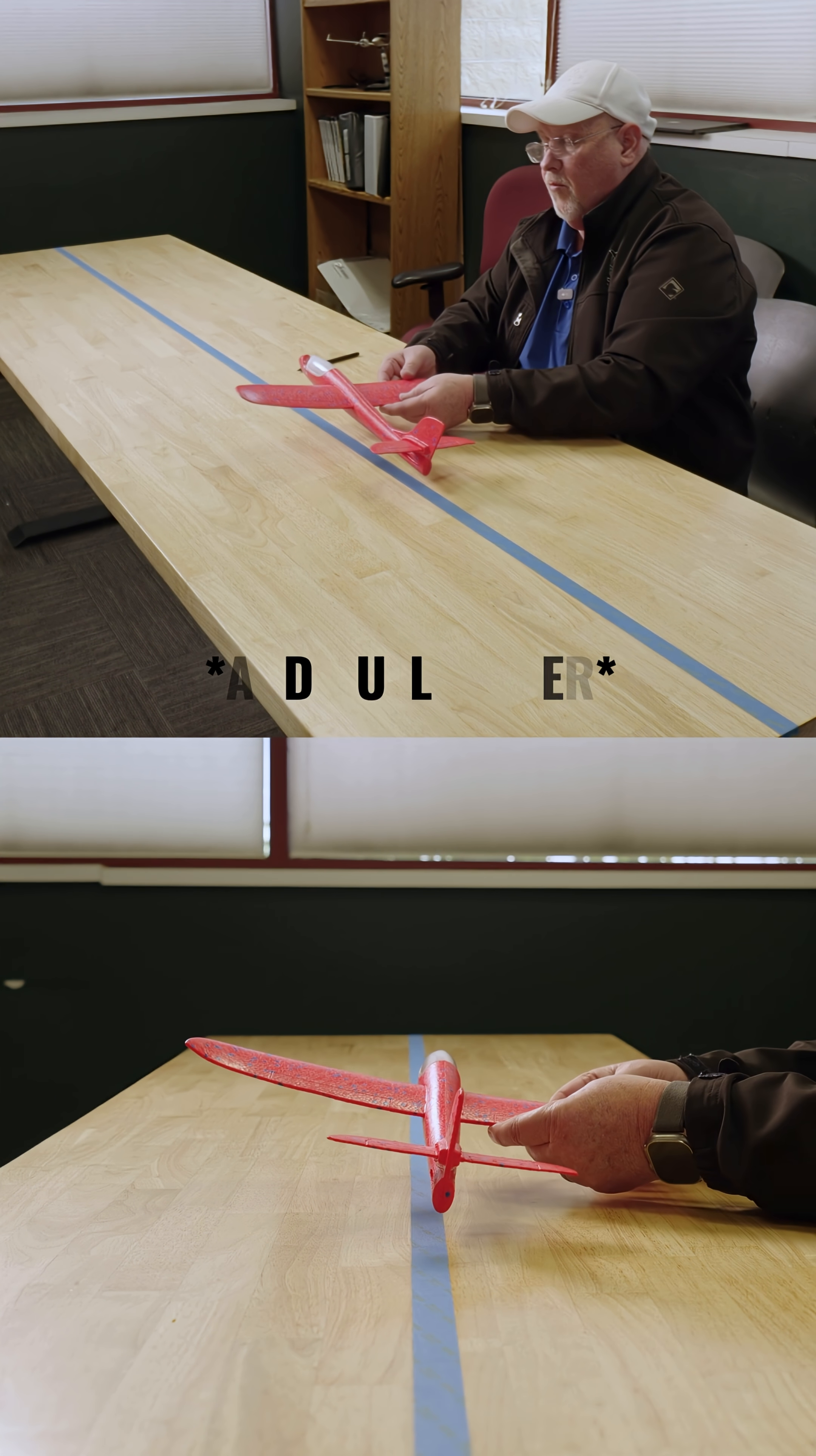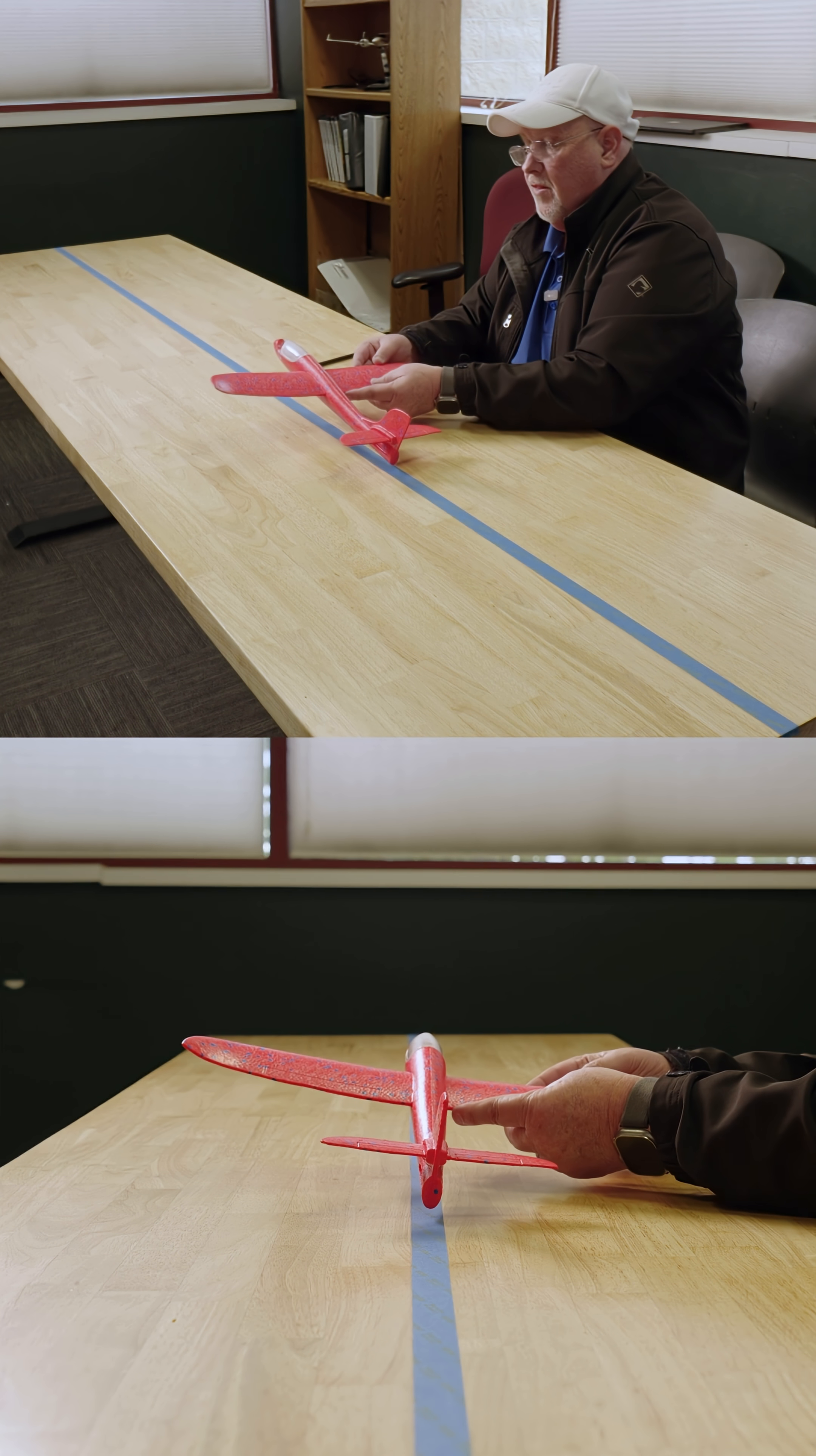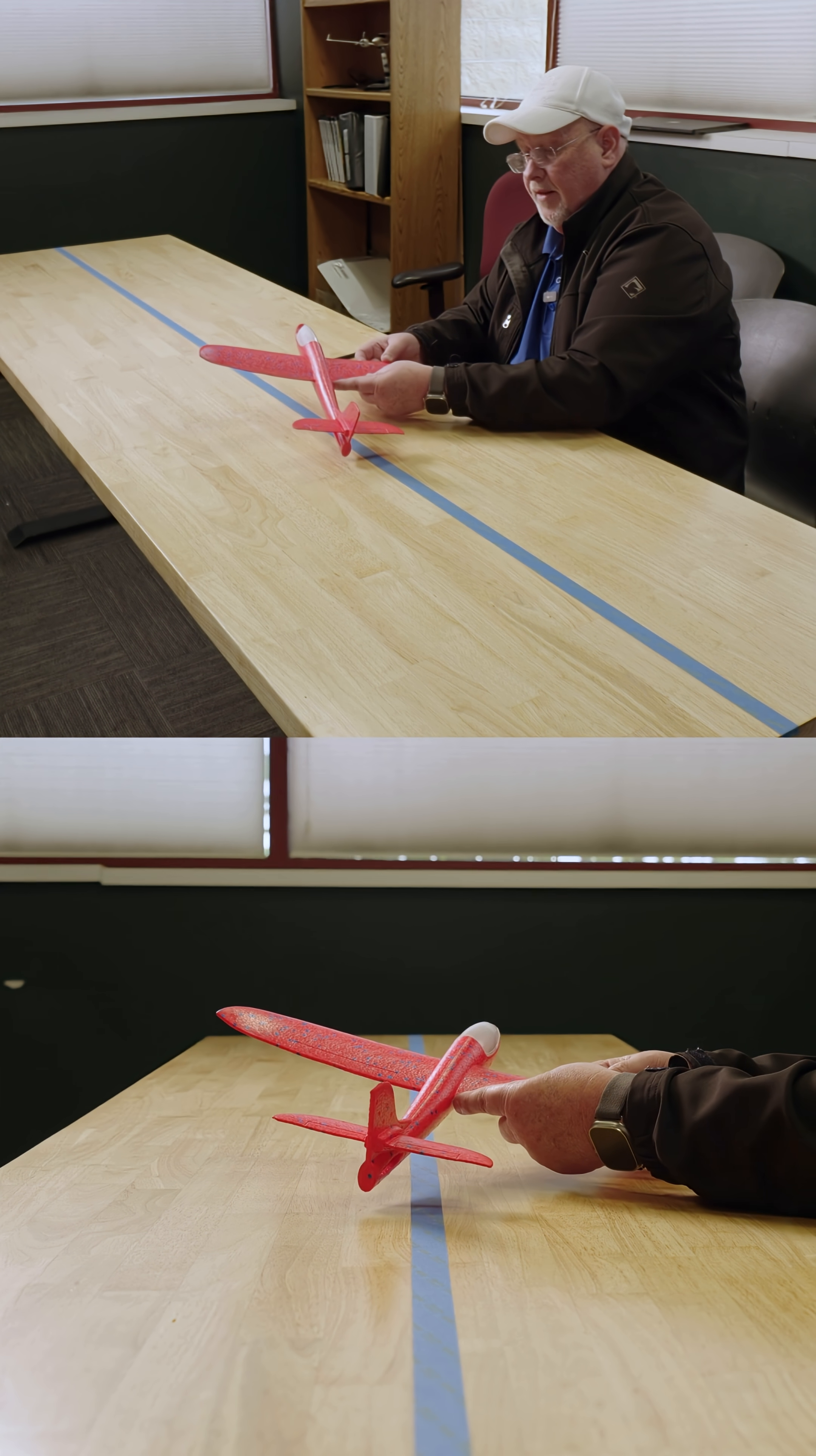And then as we flare, remember, we're removing torque from the engine. When we remove torque from the engine, this airplane wants to go to the right a little bit.